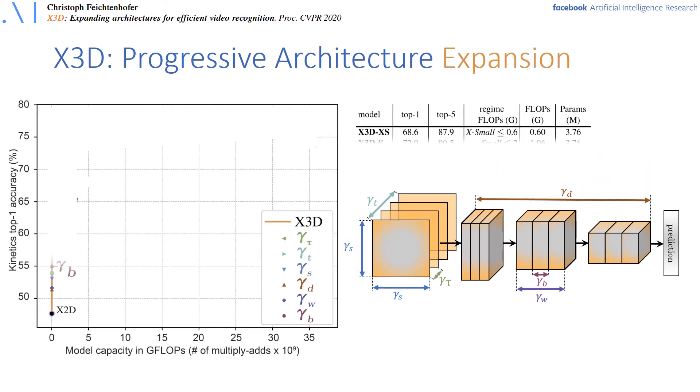The output of our expansion are a sequence of models from extra small to extra large capacity as we exponentially increase the model complexity.